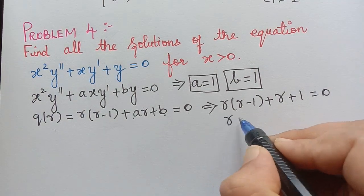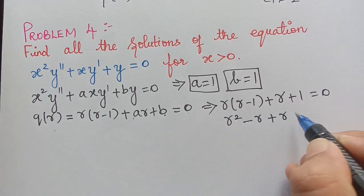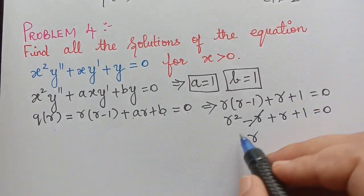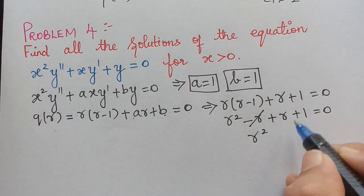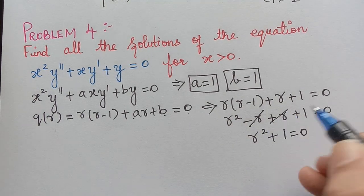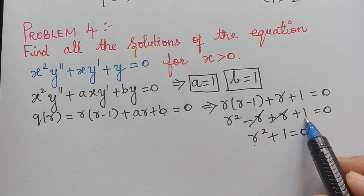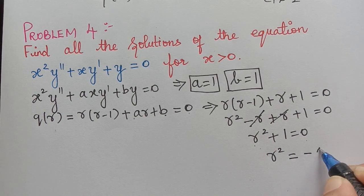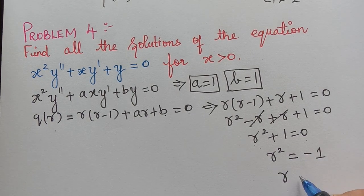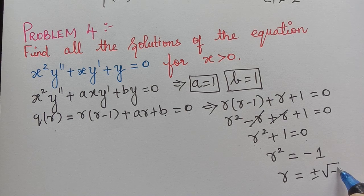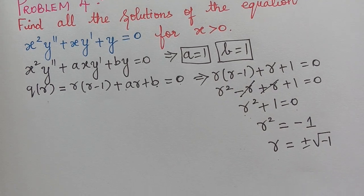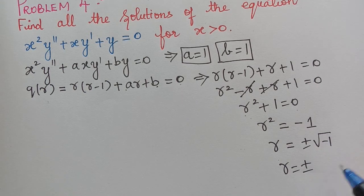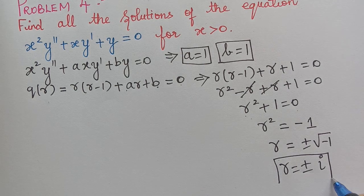On simplification we get r² − r + r + 1 = 0, and we arrive at r² + 1 = 0 because −r and +r cancel. From this we obtain r² = −1, so r = ±√(−1) = ±i.